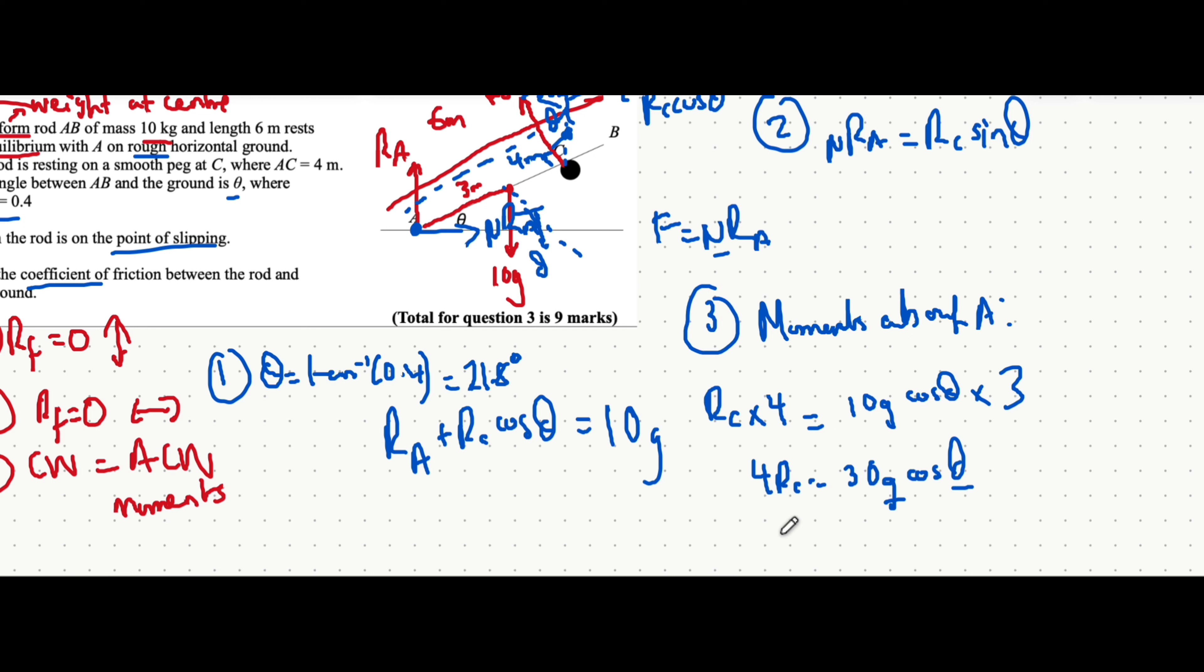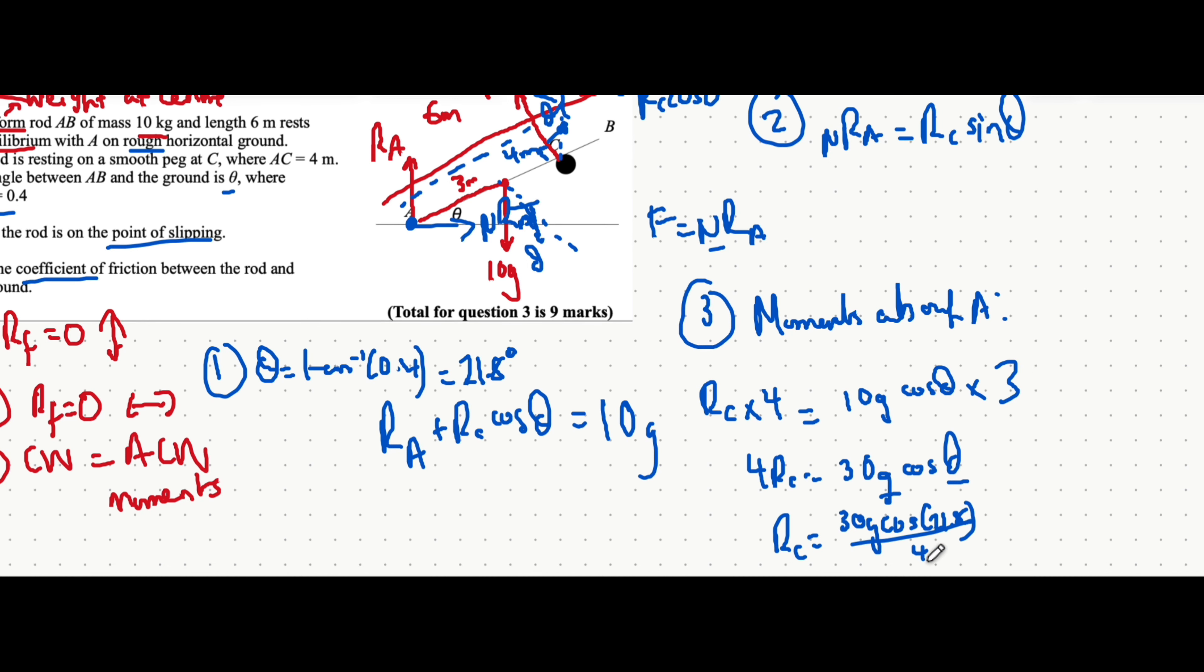Everything now is going to fit together like a puzzle. So R_C is equal to 30 G cos theta all divided by 4. I'm just going to very quickly do this. 30 times 9.81.